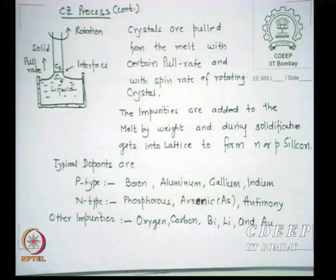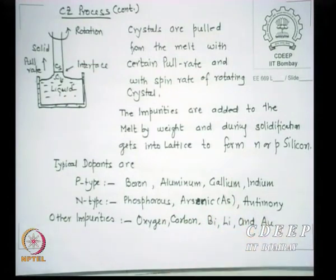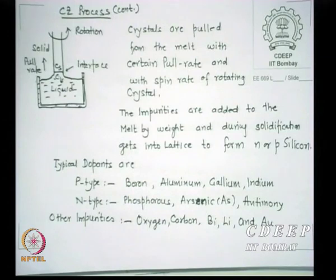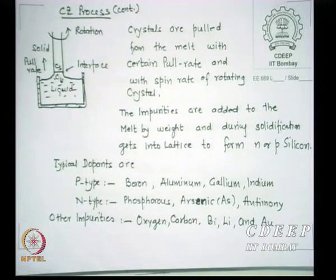The segregation coefficient is a material property decided by the band structure or equivalently the atomic structure of the material. For different impurities, these segregation coefficients — available in many books, journals, and online — show that bismuth and lithium have very low segregation coefficients, so they actually segregate more on the melt side and do not go to the solid. Boron has 0.8, so it will segregate more towards the solid compared to bismuth or lithium. Phosphorus has 0.35, arsenic 0.30, antimony is very low at around 0.023, and gallium has 8×10^-3.